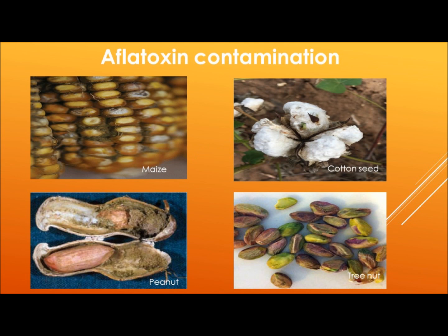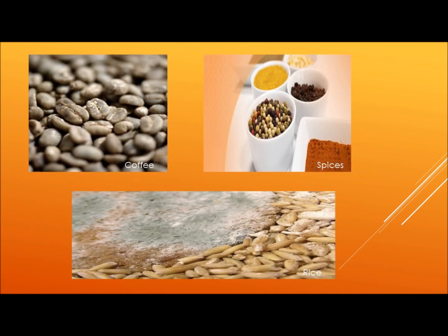Major food crops affected by Aflatoxins are nuts and grains. Pre-harvest contamination mainly occurs in maize, cotton seed, peanuts and tree nuts. Post-harvest contamination is found in coffee, rice and spices.